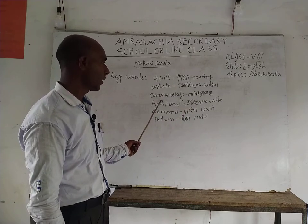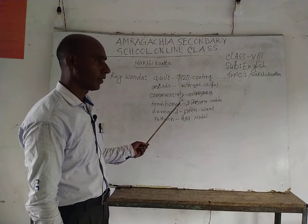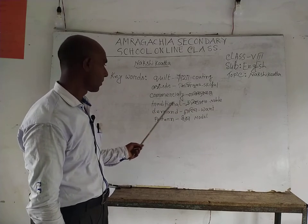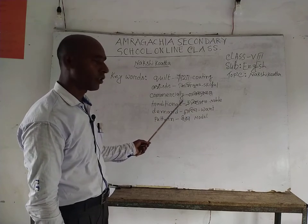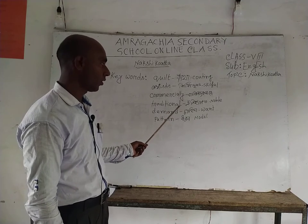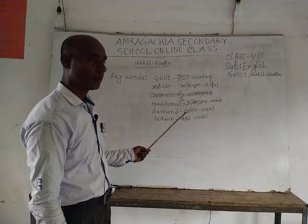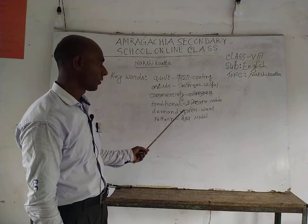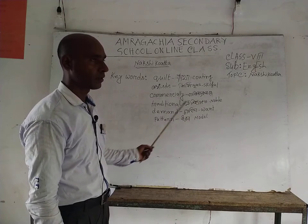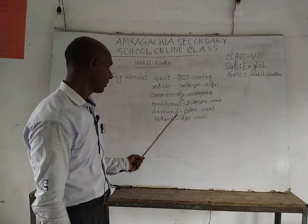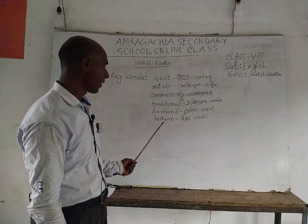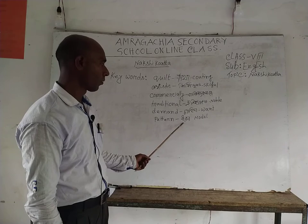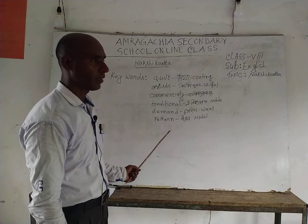Then 'commercially' — Bangla: 'banizik bhabhe'. 'Traditional' — Bangla: 'oytishyugato'. 'Nobel', 'traditional'. 'Demand' — Bangla: 'shahida', synonym: 'want'. 'Pattern' — Bangla: 'dharan', synonym: 'model'.